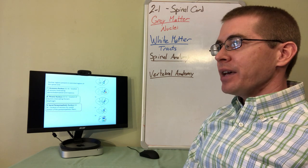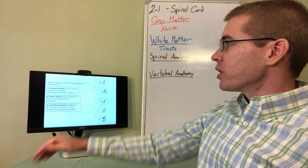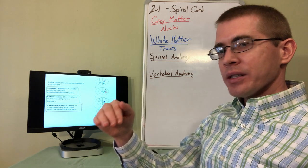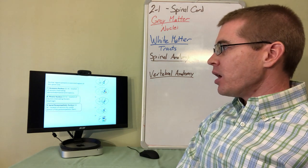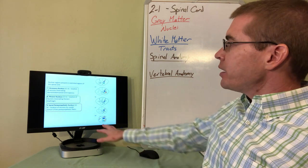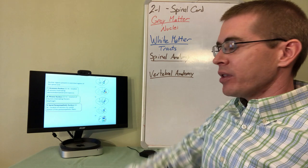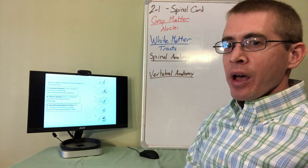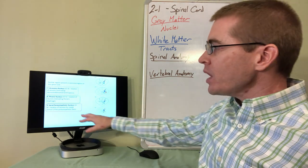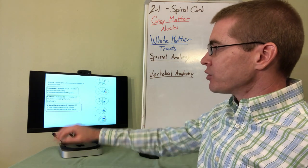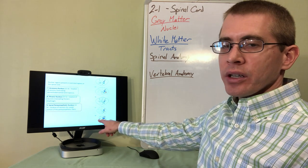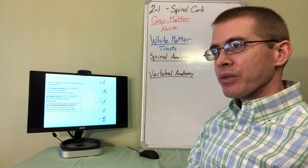If an individual has damage to the spinal cord above C3, 4, and 5, they will lose the ability to innervate their diaphragm because the upper motor neurons innervating the phrenic nucleus will be severed — those individuals will need to be on a respirator to breathe. Regarding parasympathetics: they are located in two places in the central nervous system — the brainstem and the sacrum. The sacral parasympathetics are located at S2, 3, and 4, in the location of the IML in the sacral spinal cord, and they perform parasympathetic innervation to the pelvis.